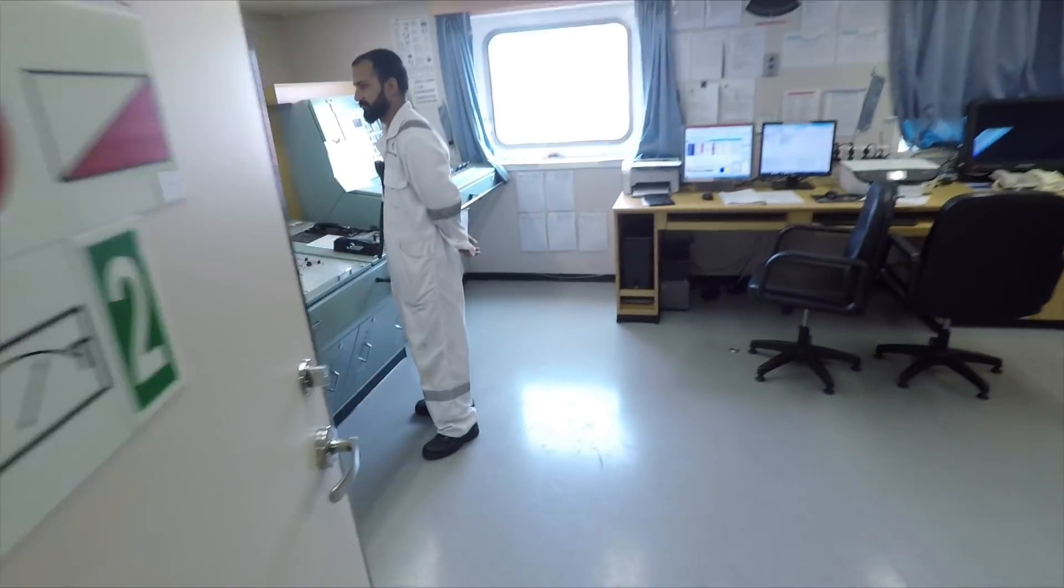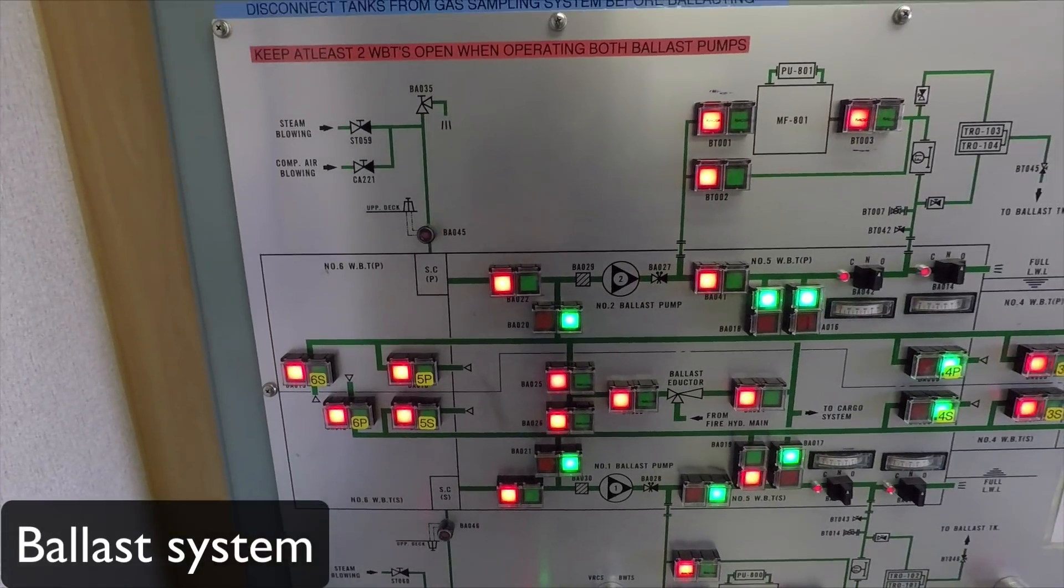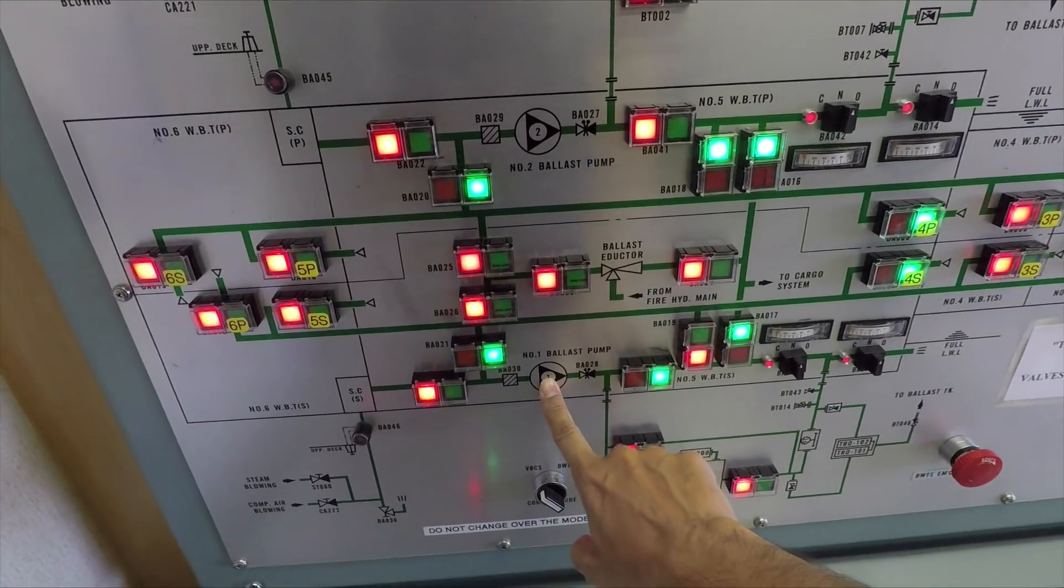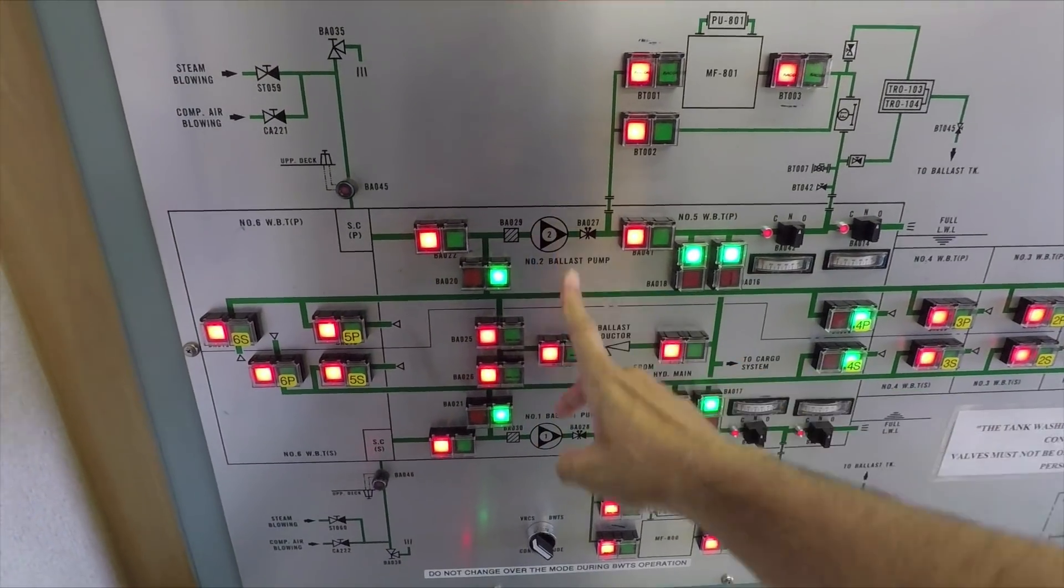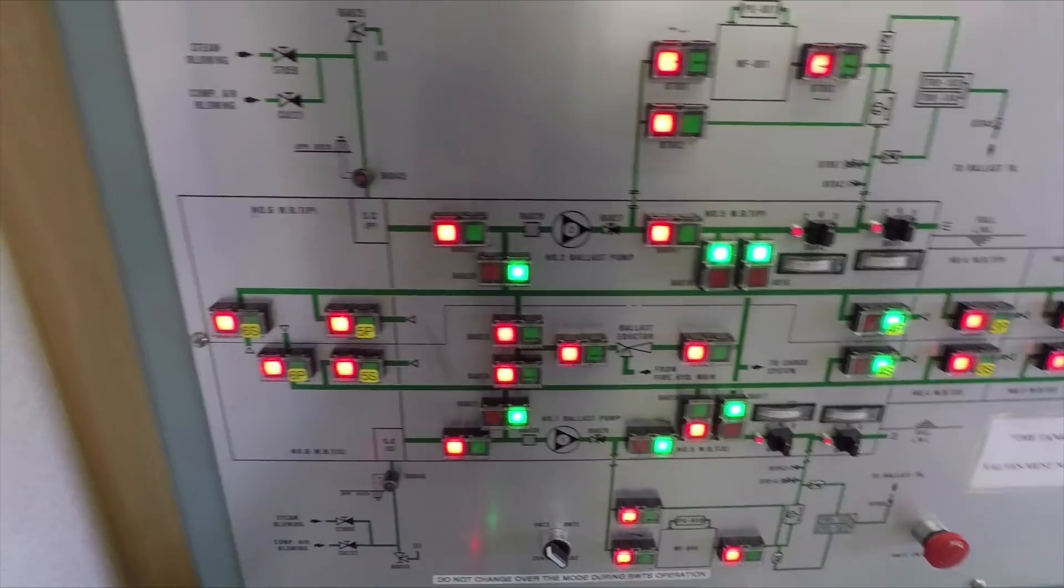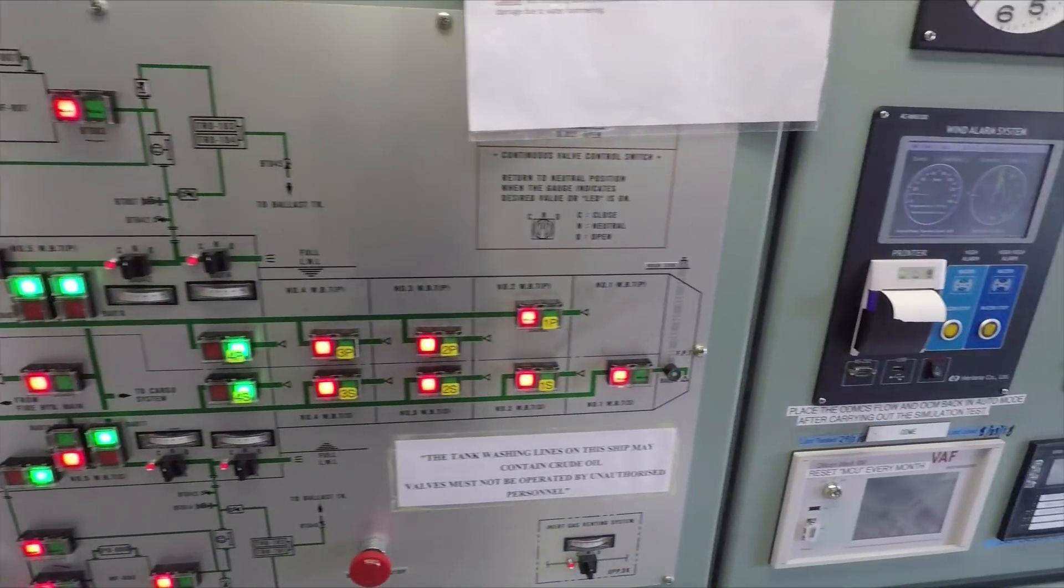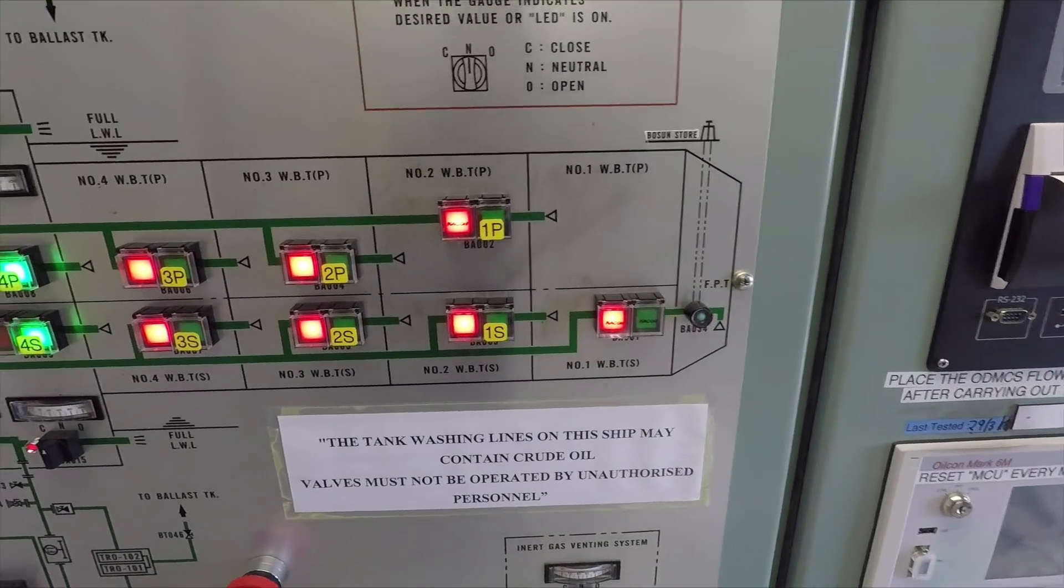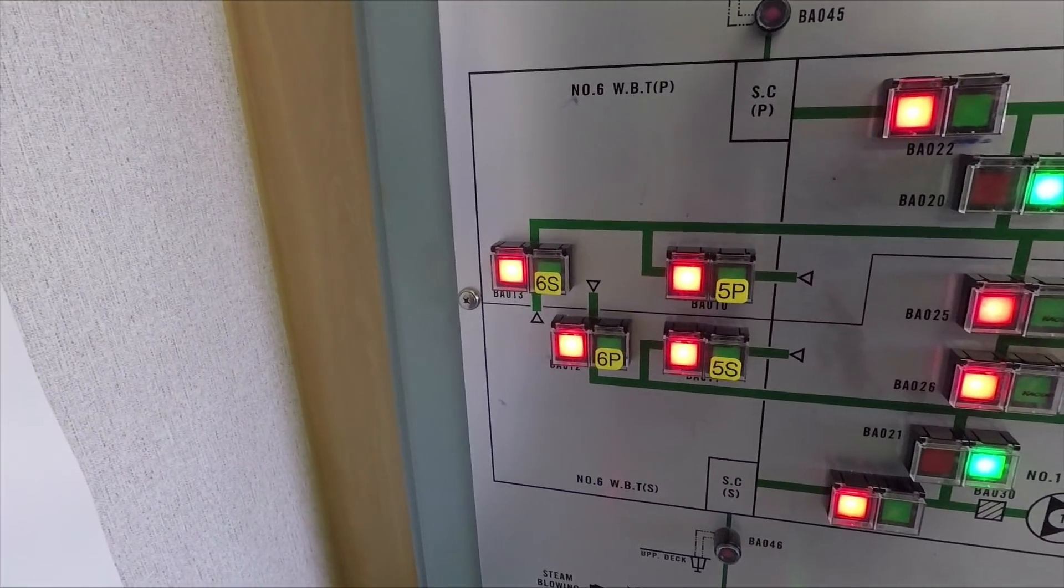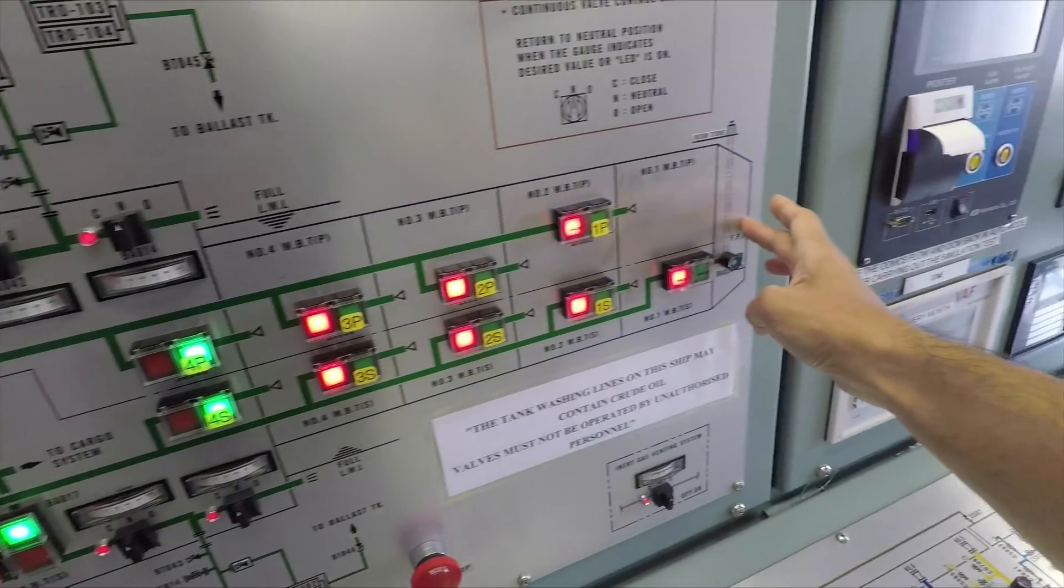First system let's see is the ballast system. Ballast systems have two pumps. One pump is here and one pump is here. Pump controls are on the Framo panel, which we will see a little later. And these are all the tanks we have—six wing tanks: one port, one starboard, two, two, three, four, five, six port and starboard tanks.